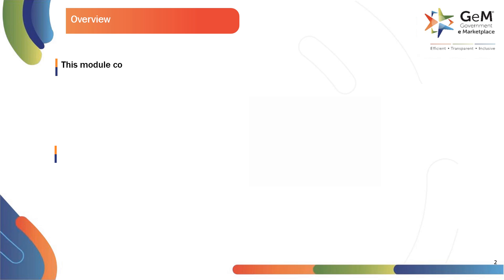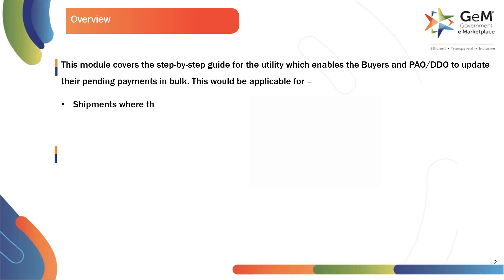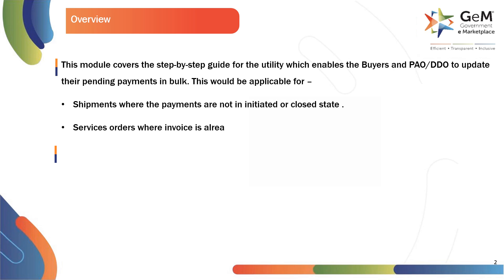This module covers the step-by-step guide for the utility which enables the buyers and PAO, DDO to update their pending payments in bulk. This would be applicable for shipments where the payments are not in initiated or closed state, services orders where invoice is already generated, and bill may or may not be drafted by the buyer.